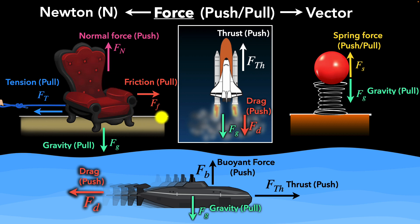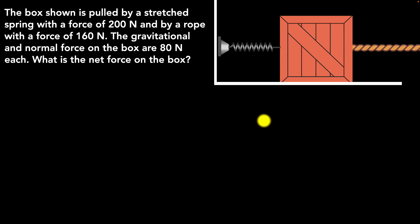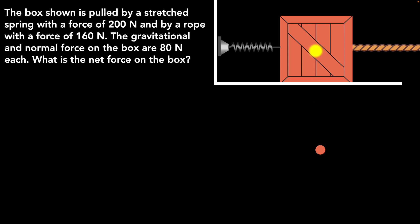Let's take a concrete example. A box is pulled by a stretched spring with a force of 200 newtons, and by a rope with a force of 160 newtons. The gravitational and normal forces on the box are 80 newtons each. What is the net force on the box? The first step is to draw what we call a free body diagram — you take the object of interest, represent it as a dot (which represents its center of mass), and then draw all the force vectors originating from that dot.